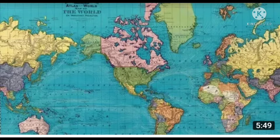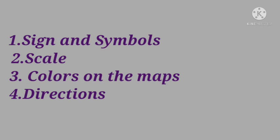Like you speak so many local languages — mother tongue, Hindi, Telugu — same way, maps also have a language. What is the language of a map? There are four languages of maps: the first one is signs and symbols, the second is scale, the third is colours on the map, and the fourth — very important — is directions.